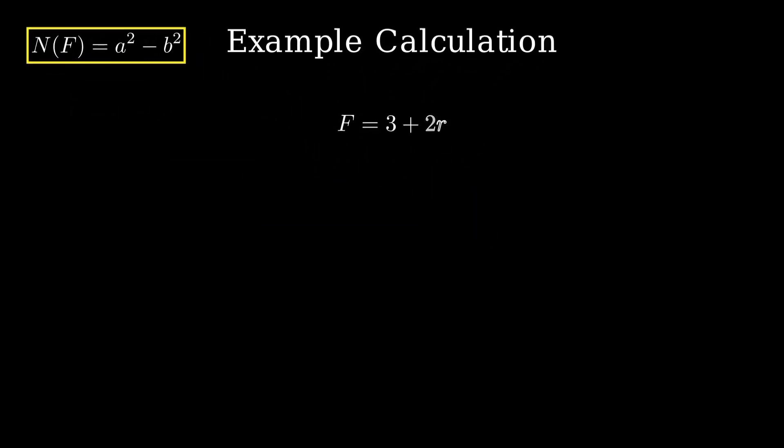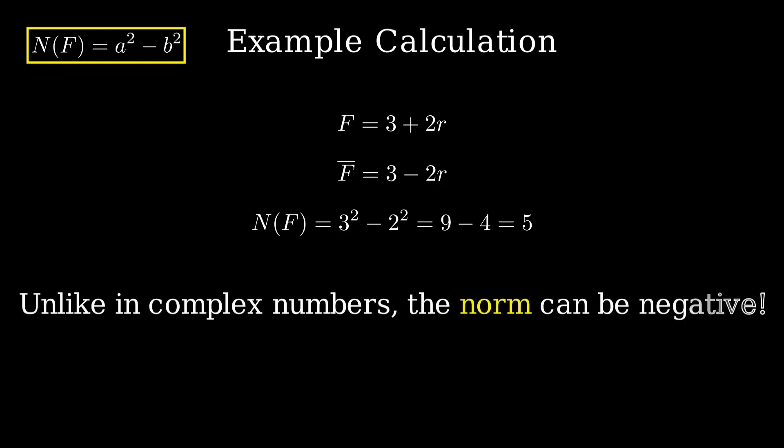For example, if f is 3 plus 2r, its conjugate is 3 minus 2r. The norm becomes 3 squared minus 2 squared, or 9 minus 4, which equals 5. But unlike complex numbers, where norms are always positive, dyadic norms can be negative. For instance, if f equals 2 plus 3r, its norm is 2 squared minus 3 squared, which is 4 minus 9, giving negative 5.